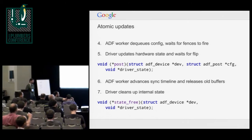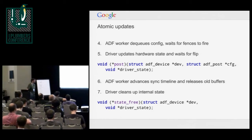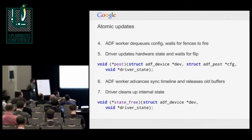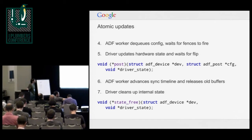Question from audience: If your display has an MMU, is there any way to cache the mapping of that DMA buf into a VA, or do you have to re-map it every time the display wants to display the buffer? Answer: That's a good question. It depends on the DMA buf implementation — ADF calls into DMA buf to do an attachment and then a mapping using those ops. Your DMA buf driver may internally cache those, but ADF doesn't attempt to do that itself.